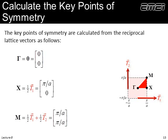Now we need to calculate where those key points of symmetry are, and we would like to have those in terms of the reciprocal lattice vectors. Gamma is always at zero. For X, we notice here is our reciprocal lattice vector T1 — X is at half of this distance, so X is just half of T1. M will be half of T1 plus half of T2, which brings us along the diagonal. So now we've actually calculated the positions of the key points of symmetry around the irreducible Brillouin zone.